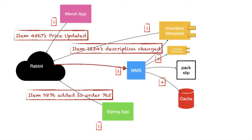So what about messaging? There's more to this pack slip printing thing. The merchandise app — where our buyers do their business — might decide to mark down the price of an item, and if that item is in a pack slip, we want to regenerate it so the customer sees the new lower price. We might change the item metadata, or change what items are actually in the order. Rather than have the warehouse management system know all these details, it just consumes these messages and whenever it gets one, it regenerates the pack slip and puts it in the cache.